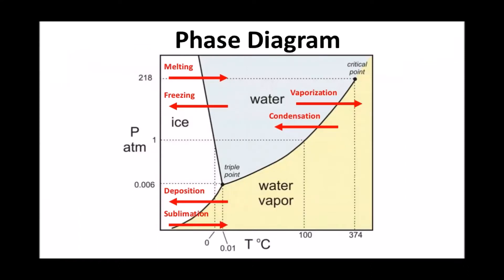The second type of heat calculation has to do with phase transitions. Whenever you heat something up or cool something down, it's not just going to heat up or cool down — at one point it will also change phase, from solid to liquid to gas, depending on the temperature change. If you start at a temperature lower than zero degrees, it's going to be in ice form, and as you heat it up, it's going to heat up the ice.